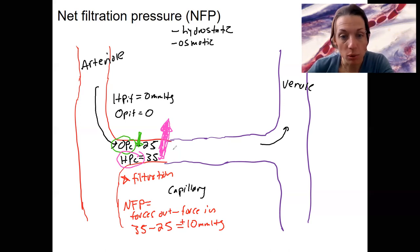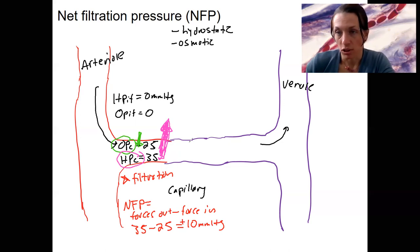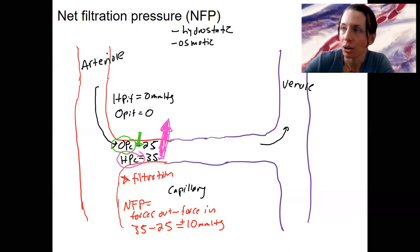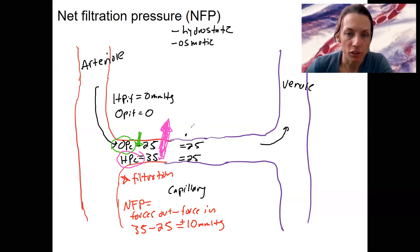As we go down the tube, what changes? Well, hydrostatic pressure is going to change because we're losing pressure — it changes throughout circulation. We have slightly reduced blood pressure as we continue through. So here at the middle, hydrostatic pressure is going to be 25, same as osmotic pressure. This gives a net filtration pressure of zero and no movement.